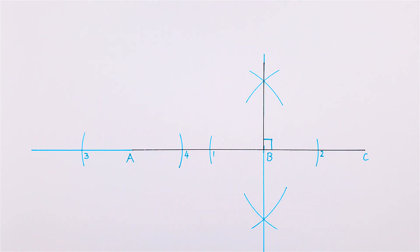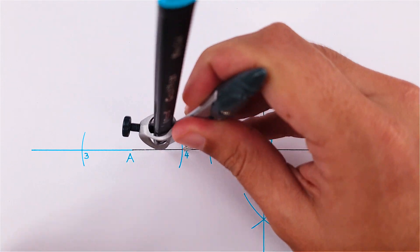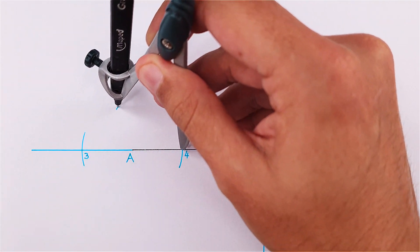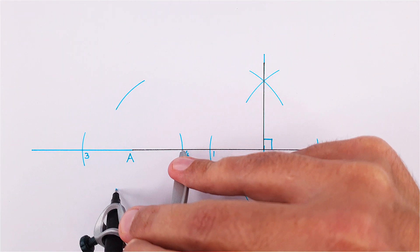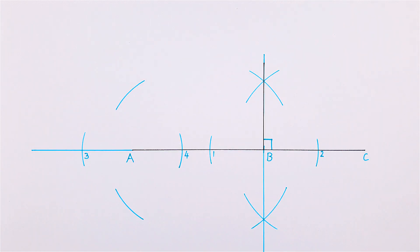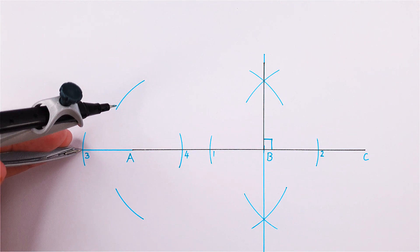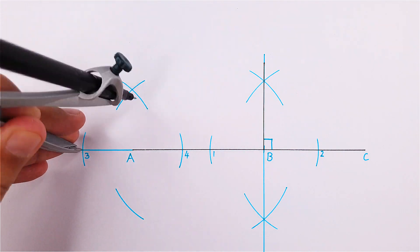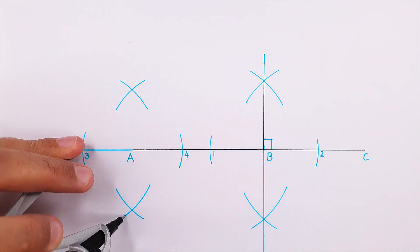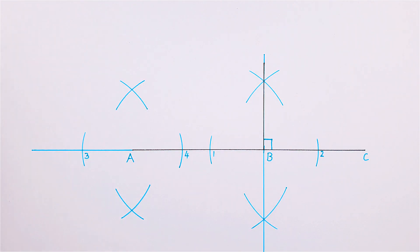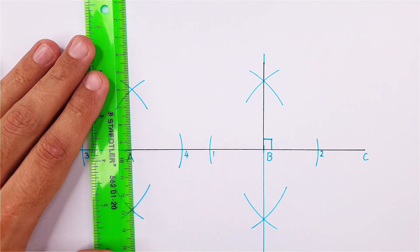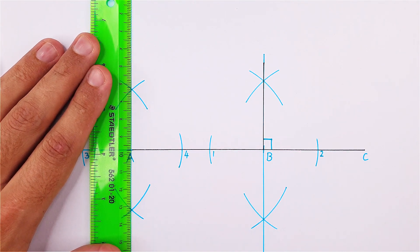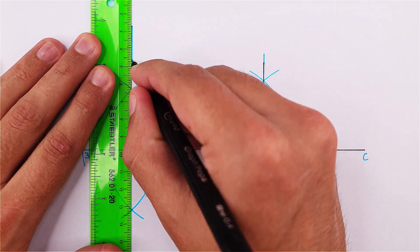Place your compass on point 1 and adjust it to any measurement more than half the distance to point 2 and draw an arc above and below point A. Using the same measurement, do the same on point 2. Place your ruler on the two intersections and draw your perpendicular bisector, then draw your perpendicular line according to the specification.